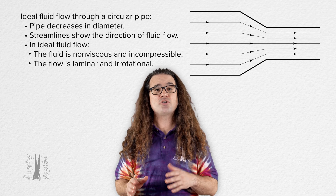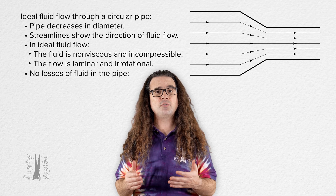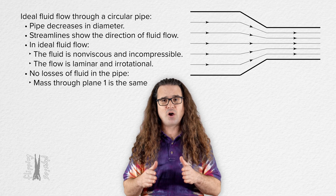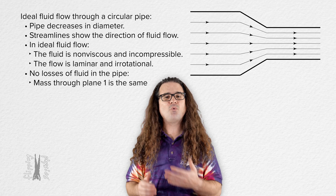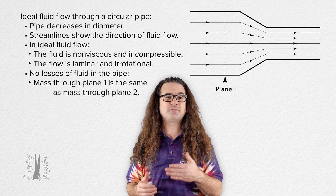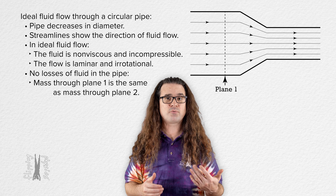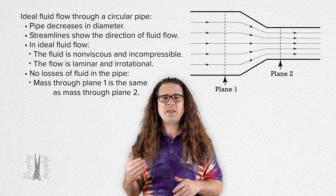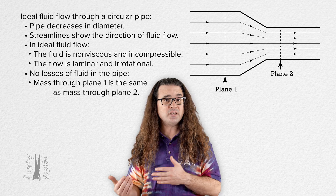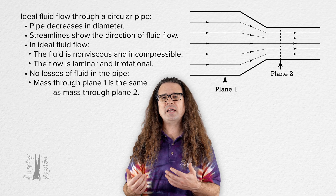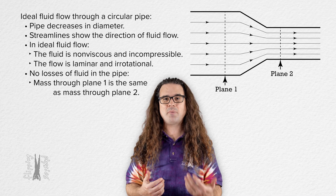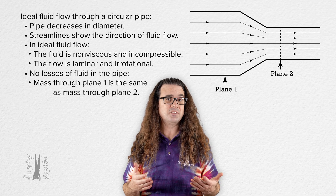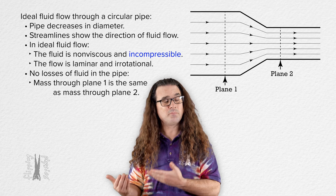Assuming there are no losses of fluid in the circular pipe, the mass of the fluid flowing through plane 1 must be the same as the mass of the fluid flowing through plane 2. The only way this could not be true is if the fluid were collecting somewhere in the pipe, which is not possible because the fluid is incompressible.